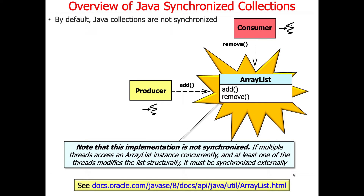By default, out of the box, especially the legacy Java collections, they're not synchronized, by and large. For example, if you try to use ArrayList with multiple threads, then chaos and insanity will ensue. And it actually tells you this — if you go read the documentation, it says: this implementation is not synchronized.